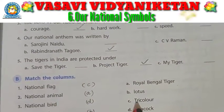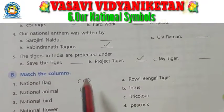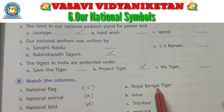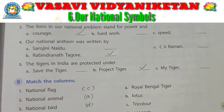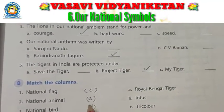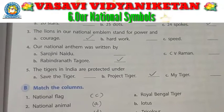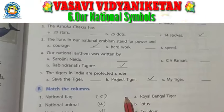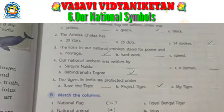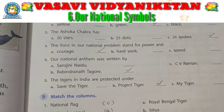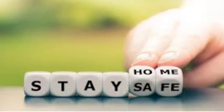Next: match the columns. National flag — three colors. National animal — Royal Bengal Tiger. National bird — Peacock. National flower — Lotus. I hope you understood well. In the remaining videos I'll cover more exercises. Until then, stay home, stay safe. Thank you, bye.